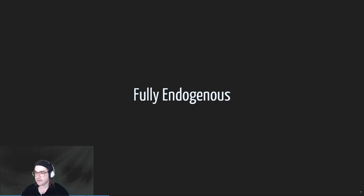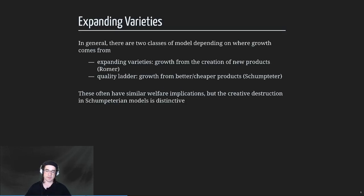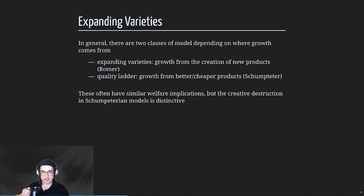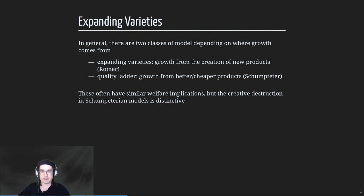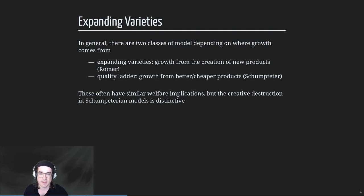Now we're going to go fully endogenous. Let me give you the lay of the land. There are many different ways you can go here. Essentially what we want to do is have some more sophisticated process - the A-dot equation is probably still going to hold at least in the aggregate, but we want to have a sophisticated process for how R, the number of researchers, is being chosen. Just like we did with Romer to endogenize S, we want to endogenize that research share.